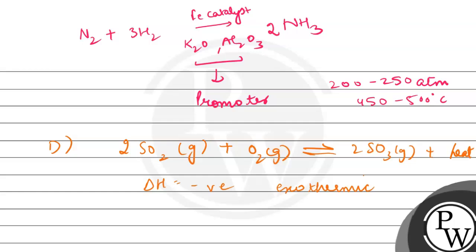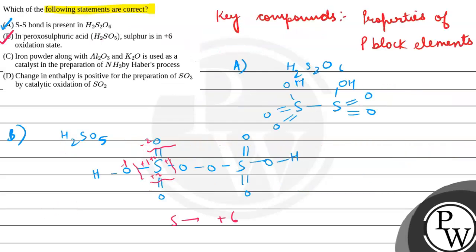So delta H is negative because it is an exothermic reaction, not endothermic. This process uses vanadium pentoxide, V2O5, as catalyst. So this option is incorrect because delta H is negative for this exothermic reaction. I hope you found the answer. Best of luck.